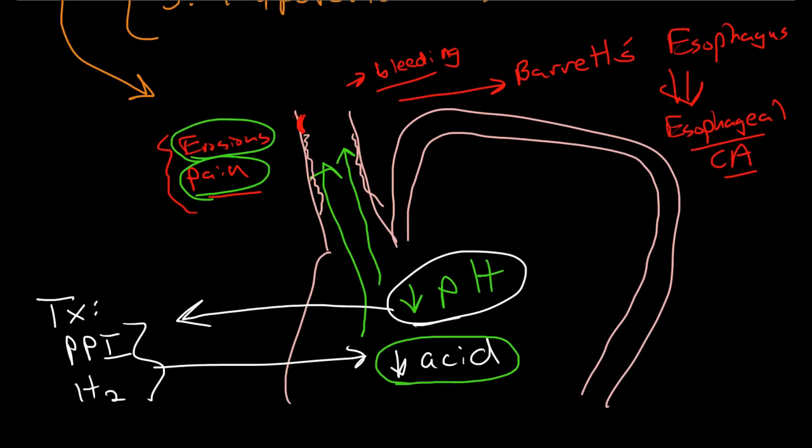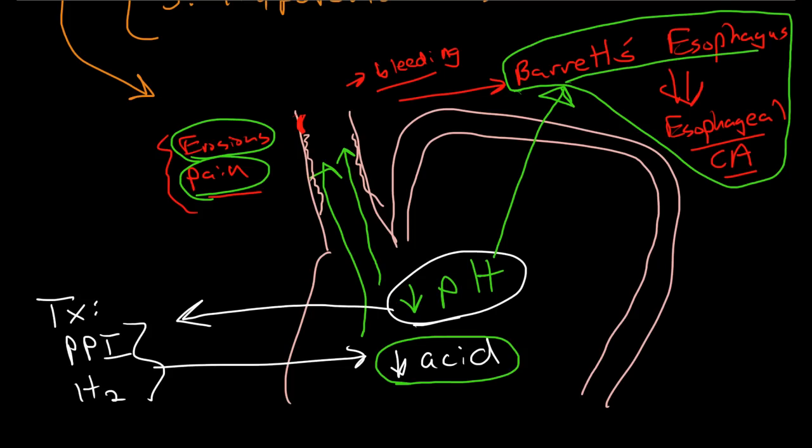Now, interestingly enough, it's not the acidity that causes Barrett's esophagus. So, reducing the amount of acidity in the stomach, but not stopping the reflux will have absolutely no impact on reducing the frequency of Barrett's esophagus and esophageal cancer. That's because Barrett's esophagus and esophageal cancer are related not to acid, but to enzymes coming from the stomach.